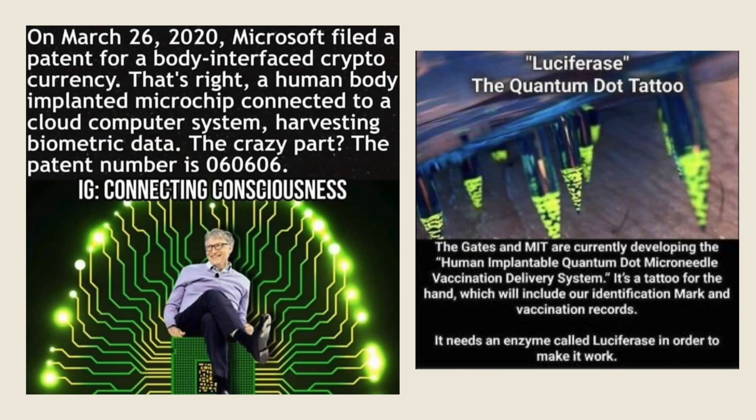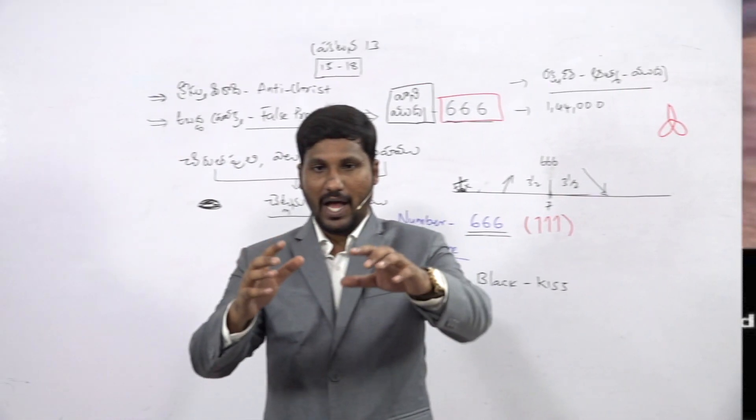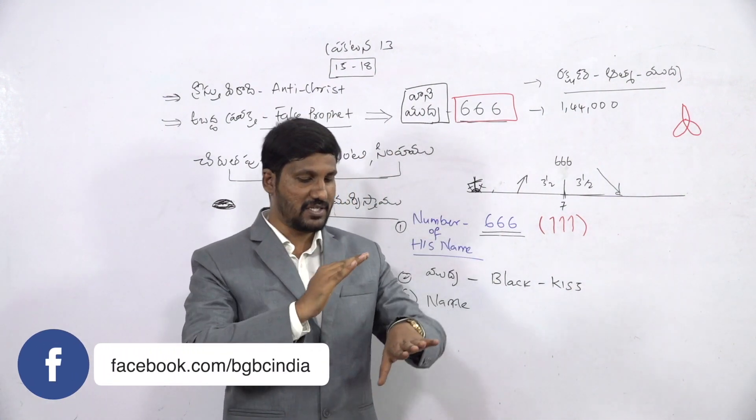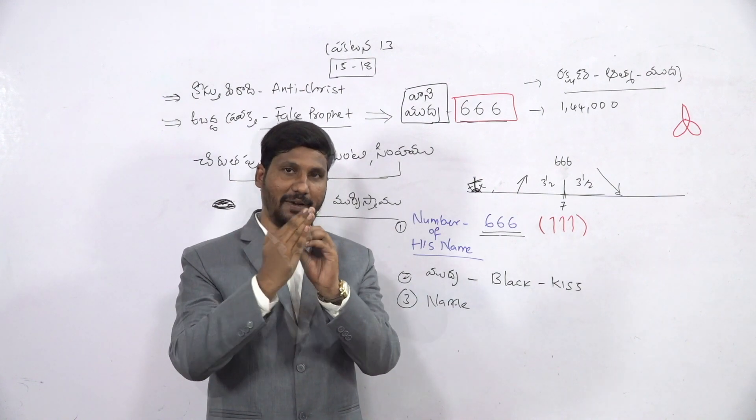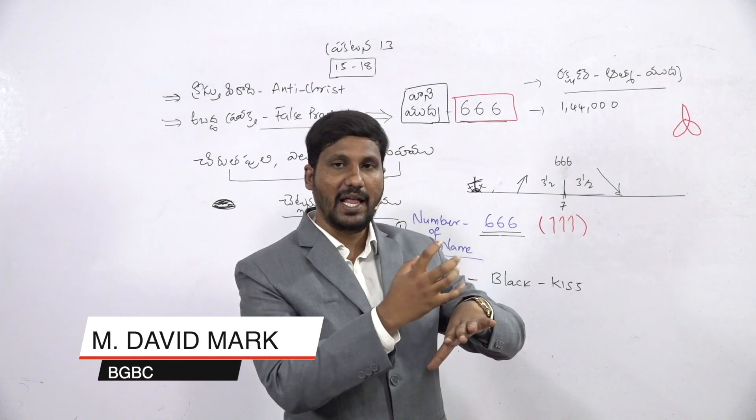Human implantable quantum dot microneedle vaccination delivery system. It's a tattoo for the hand which will include our identification mark and vaccination records. So, if you use a patch, you can use the first needle. After that, you can use the needles inside the needle, then you can use the vaccine.